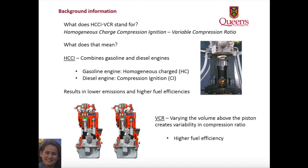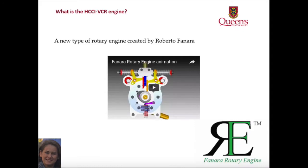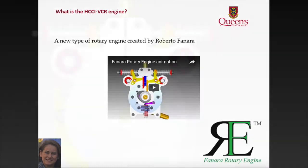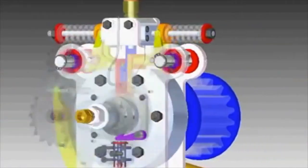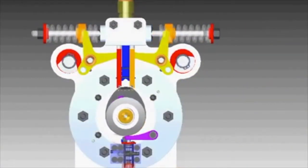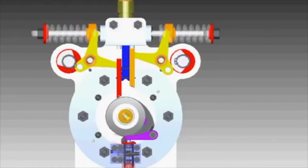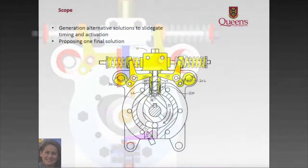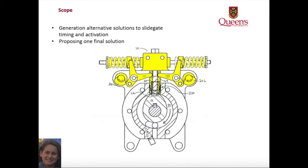What do they mean by variable compression ratio? VCR engines allow for dynamic change of the volume above the piston and the cylinder to be changed, enabling variability in the compression ratio, which in turn permits higher fuel efficiency. Roberto Fanaro's design combines the two concepts just explained to obtain the HCCI VCR engine, also known as the Fanaro engine. It is a new type of rotary engine with a fuel injector and exhaust valve, and two gates for the compression and expansion of the fuel-air mixture. Our scope for this project is to provide alternative solutions to the current mechanical design for the gate actuation system in the first prototype. The section in question is highlighted in yellow in the current image of the engine.